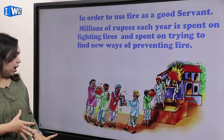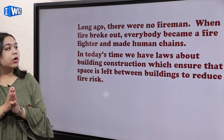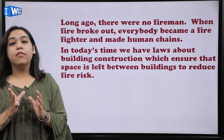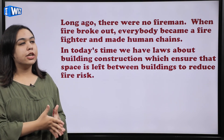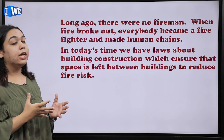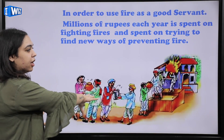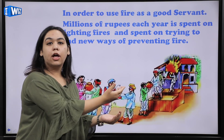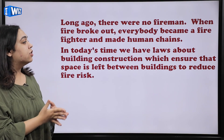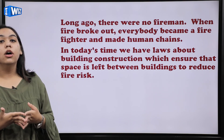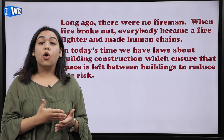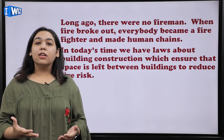Long ago there were no firemen. When fire broke out everybody became a firefighter — they did not have fire brigades. So everybody became a firefighter and made human chains. Just like in this picture you can see a chain of people carrying buckets and throwing water on the fire. In today's time we have laws about building construction which ensure that space is left between buildings to reduce fire risk, and laws are created to ensure fire can be used in a good manner.